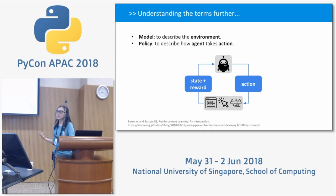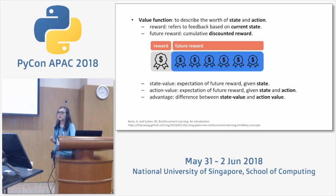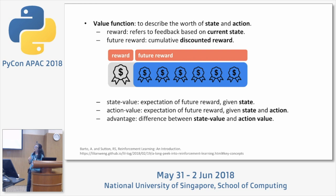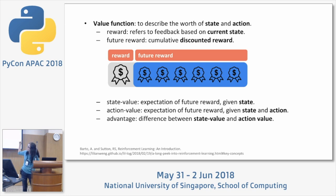To understand the terms: a model describes the environment, a policy describes how the agent takes action. There is also a value function — there are many ways to define it. The way you define the reward defines how the agent will act. Reward is the feedback based on current state. Future reward is the cumulative discounted reward, where future values are discounted.